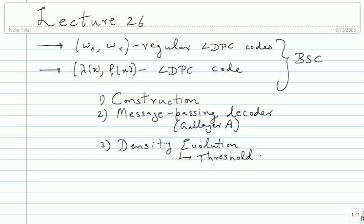For density evolution you need rho and lambda — that's it. You do not need the block length, you do not need the actual matrix, you just need rho and lambda. But you need the IID assumption, which means block length will have to be very large, and it will hold only for as many iterations as allowed by the minimum length cycle. The algorithm can be run just by knowing lambda(x) and rho(x).